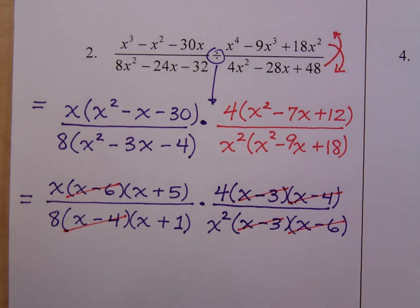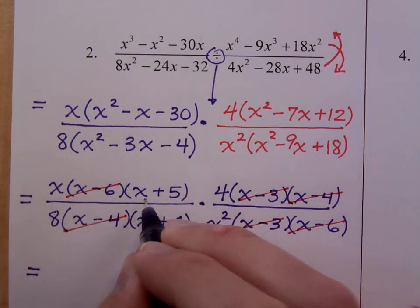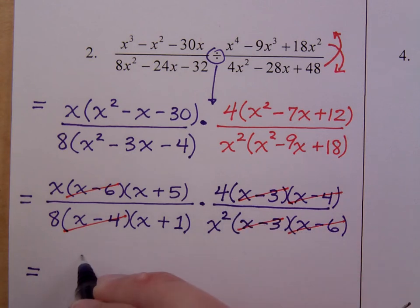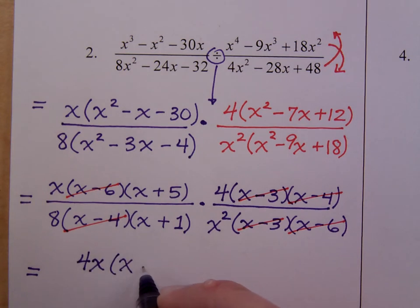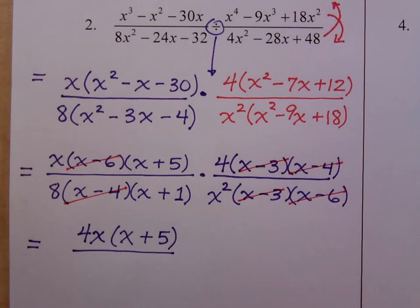Now that we have everything factored completely, we just cancel the common factors. We have common factors of x minus 3, x minus 4, and x minus 6. I'm going to combine this for you. x times x plus 5 times 4. Those single term factors are going to put out in front. So 4x times x plus 5 over 8 times x squared times x plus 1.